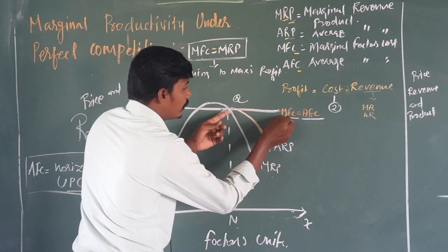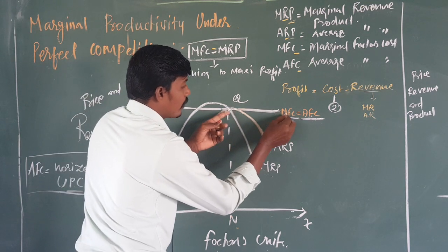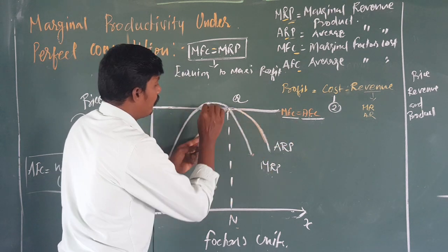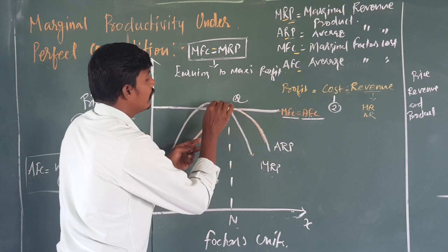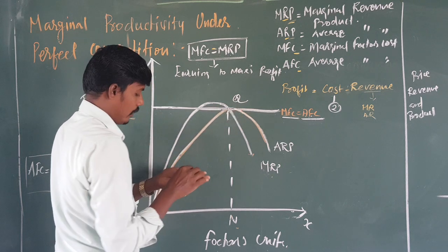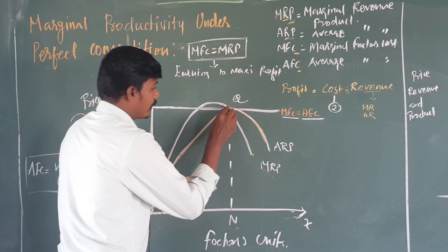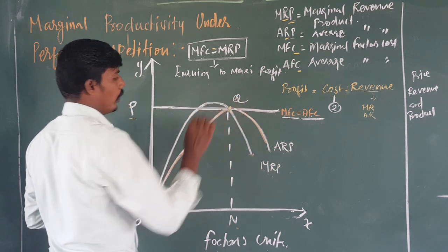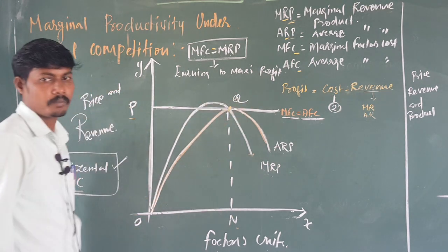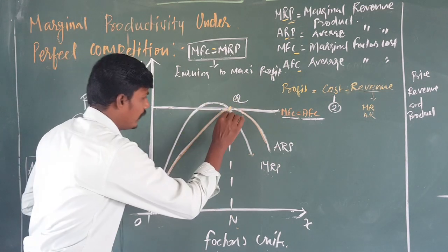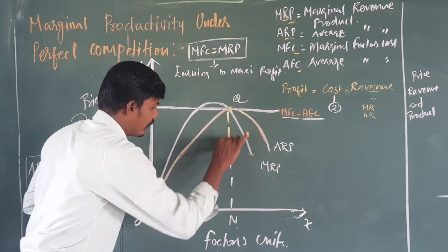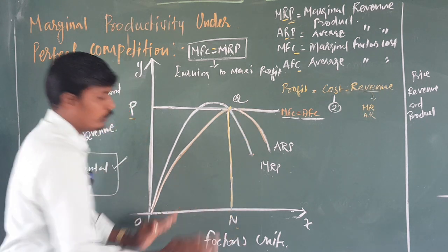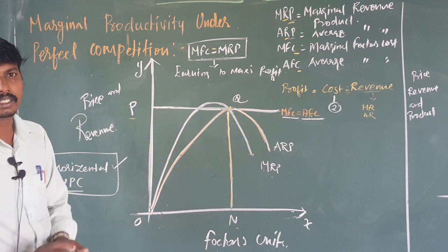MFC is a horizontal line. MRP slopes downward from left to right. Where MRP intersects MFC, that is the equilibrium point Q. At this point, the factor units employed are determined — the product hiring is stopped at this intersection.